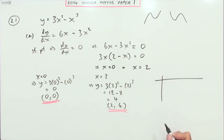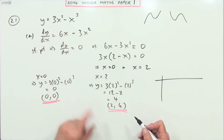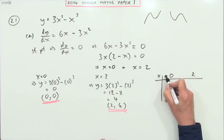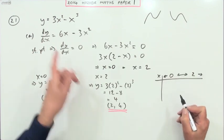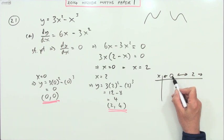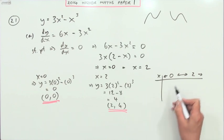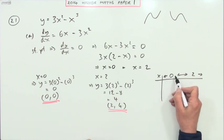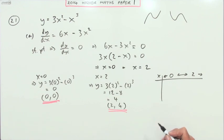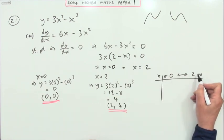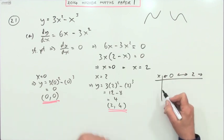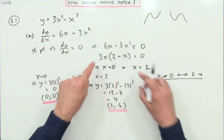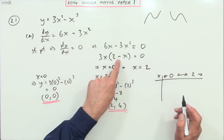To determine the nature of the stationary points, we use a nature table. The second derivative is also accepted and would actually be quicker — we'll do that afterwards. For the nature table, we consider what happens either side of x equals zero and x equals two. Strictly speaking it's a continuous curve, so you just use neighbourhoods, picking values either side and evaluating the derivative expression.